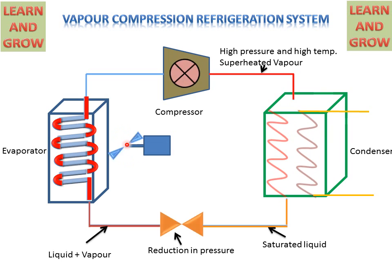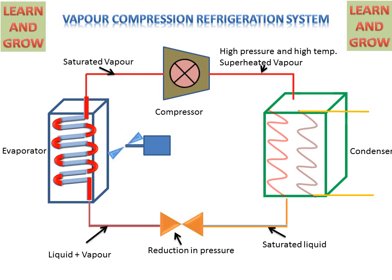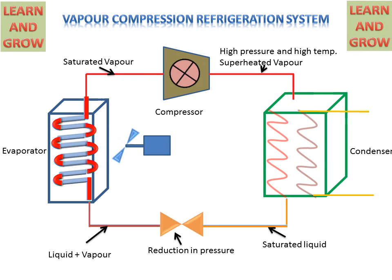This fan will supply warm air and on the other side we get cool air. These vapours will go to the compressor again — these are the saturated vapours — and then again these saturated vapours will be converted into high pressure and high temperature superheated vapour by the compressor. So this cycle will repeat and the working of the Vapour Compression System will continue.